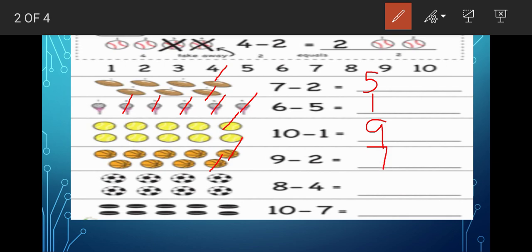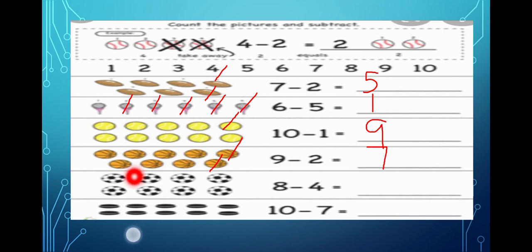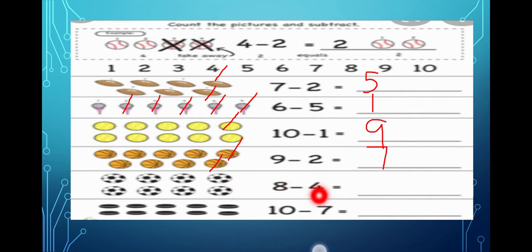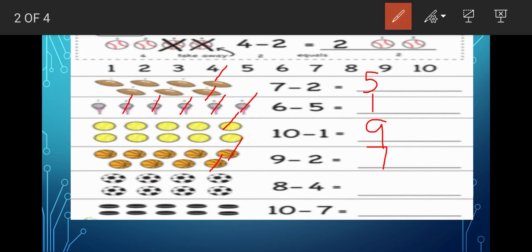In the same way, this is also a picture of balls. Here you are having eight balls. Out of that how many you have to cut? Four. So let us cut four balls — one, two, three, and four. So how many are left out? Four balls are left out. That means eight minus four is equal to four.